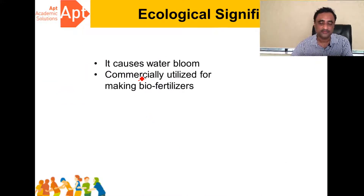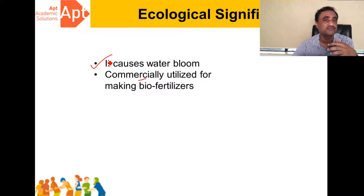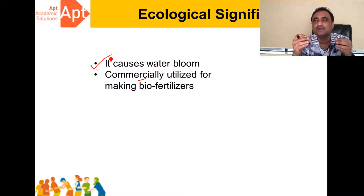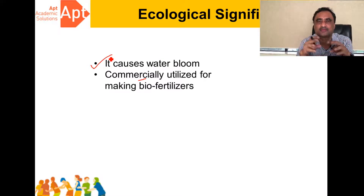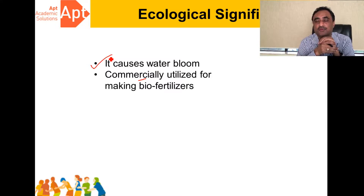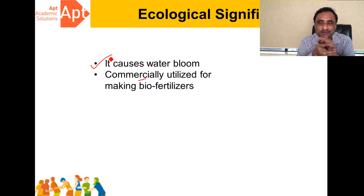As for ecological significance, cyanobacteria cause water bloom. Whenever there is excessive cyanobacterial growth in an aquatic body, it produces a smell of rotten fish. This excessive growth leads to a very low amount of dissolved oxygen, causing the death of aquatic animals. This event is called water bloom, which eventually leads to eutrophication. Cyanobacteria also help in the commercial production of biofertilizers, making them very important for our environment.